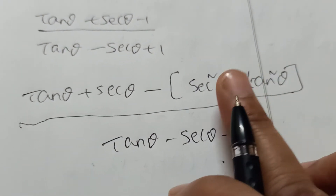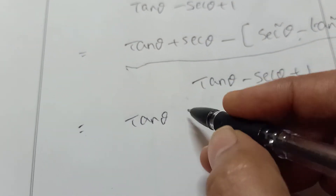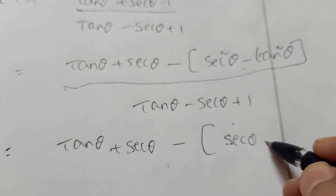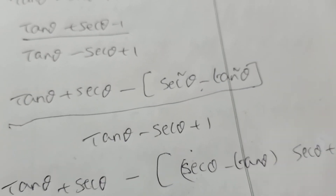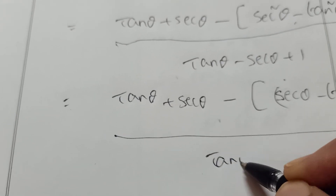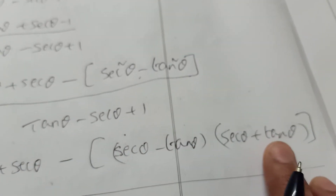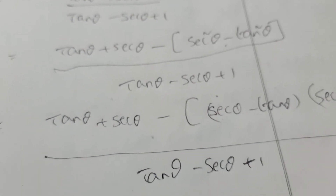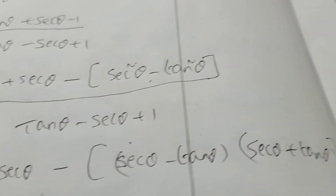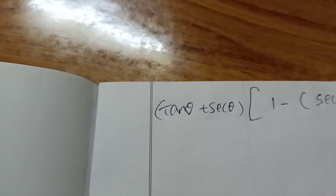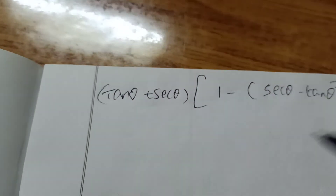Now sec²θ minus tan²θ is a difference of squares (A² minus B²), so split it as (sec θ + tan θ)(sec θ − tan θ). The numerator becomes (tan θ + sec θ) into (sec θ minus tan θ), divided by tan θ minus sec θ plus 1. Take (tan θ + sec θ) as a common factor. The remaining bracket gives 1 minus (sec θ minus tan θ), which simplifies to minus(sec θ minus tan θ), noting the sign change carefully.